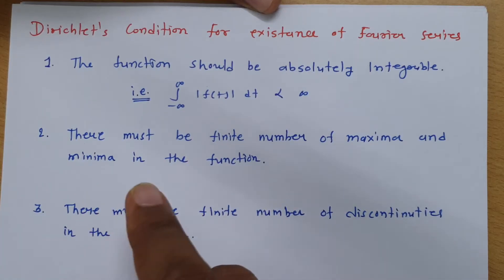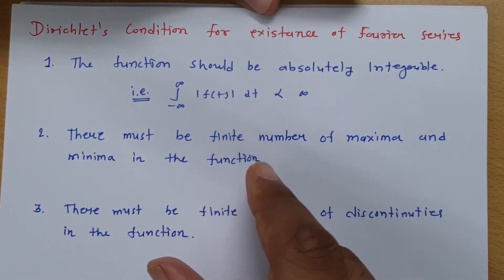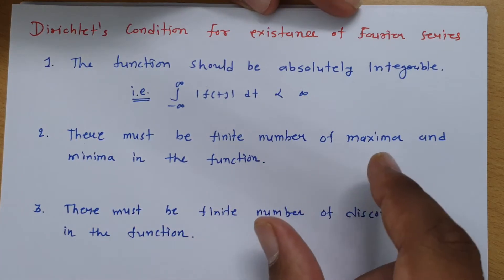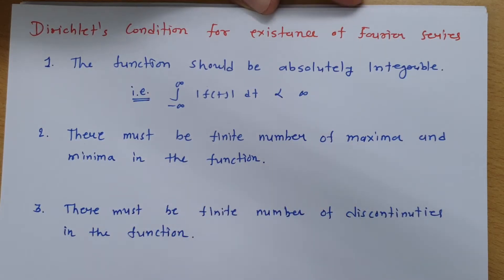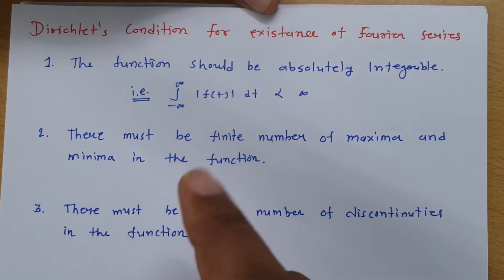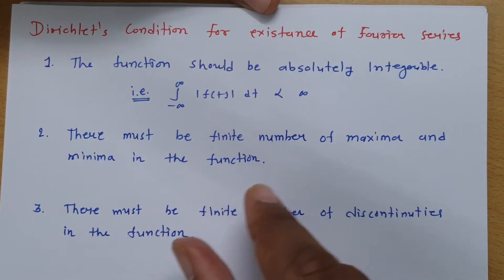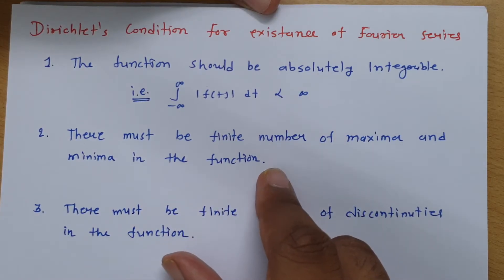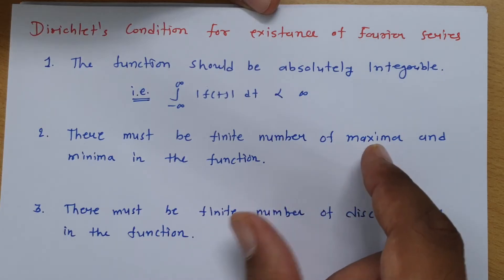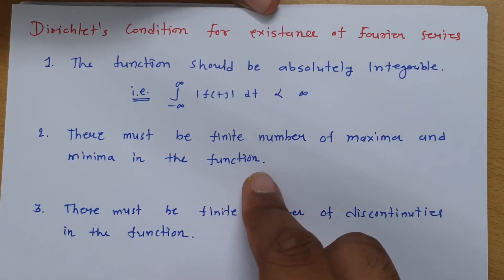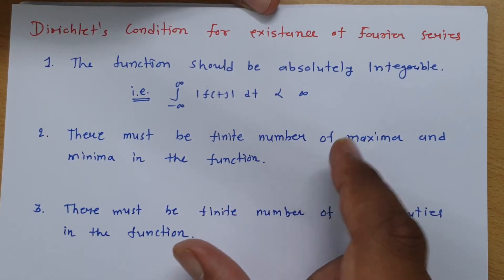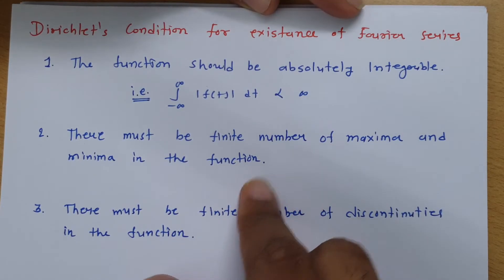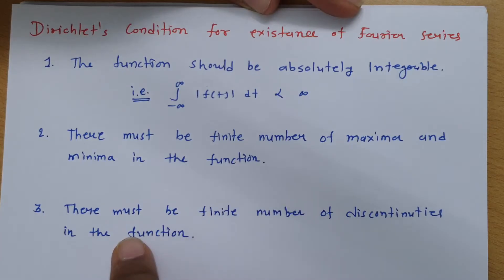The second condition is that there must be a finite number of maxima and minima in the given function. Whenever you have any function, it should not have an undefined number of maxima and minima — it should have a finite number of maxima and minima.